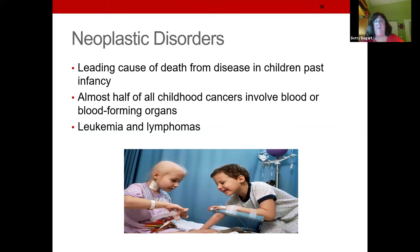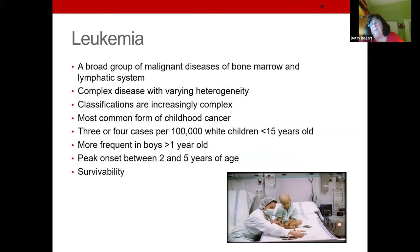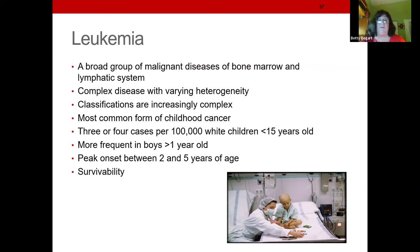Neoplastic disorders: leukemias and lymphomas account for half of all cancers in children. Leukemia is when the body produces immature white blood cells that are useless. White blood cell counts can be as low as 0.1 when normal is at least 7, so these children have essentially no immune system. It's the most common childhood cancer. It's more frequent in boys over one year old, seen around ages 2-5. Treatment involves multiple phases of chemotherapy over a long process.